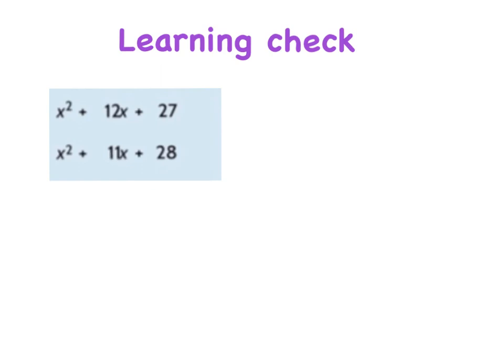Okay, so tonight's learning check is two sums. x² + 12x + 27, you're asked to factorise that. And the second one is x² + 11x + 28. So you can do those into your copy.